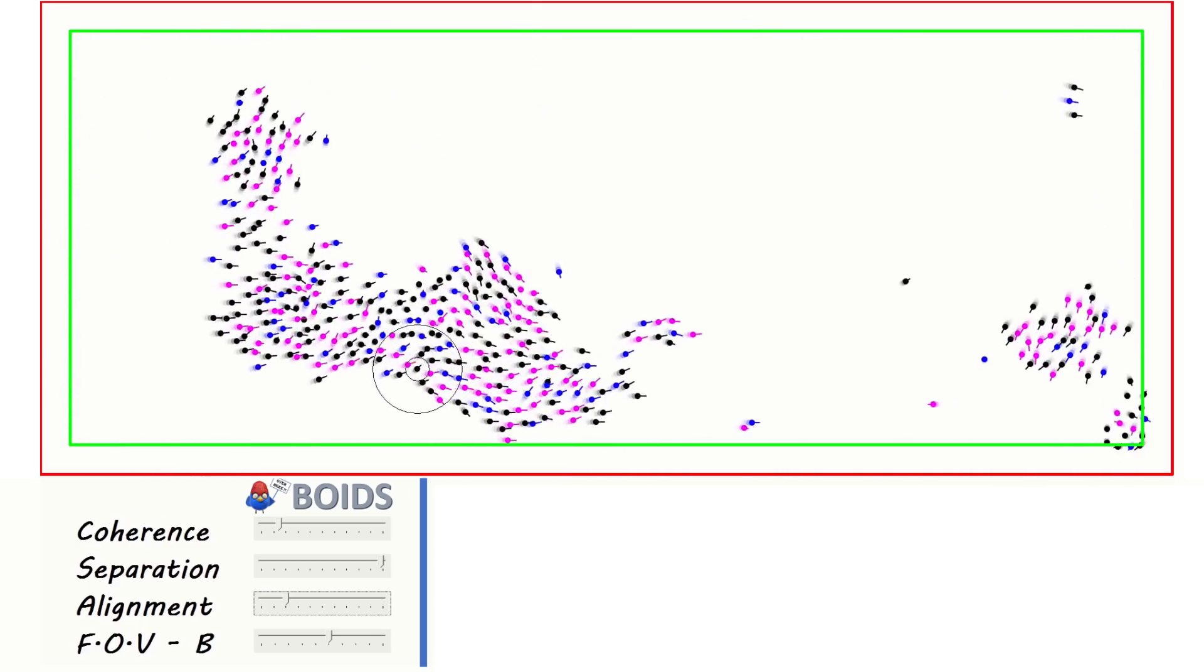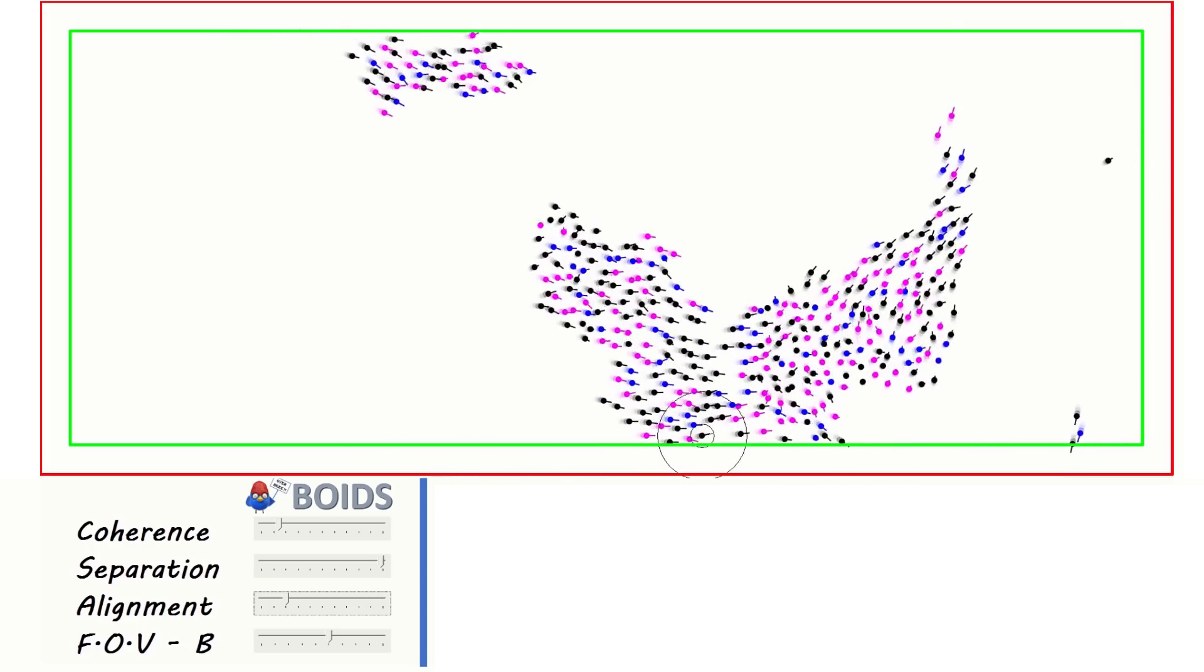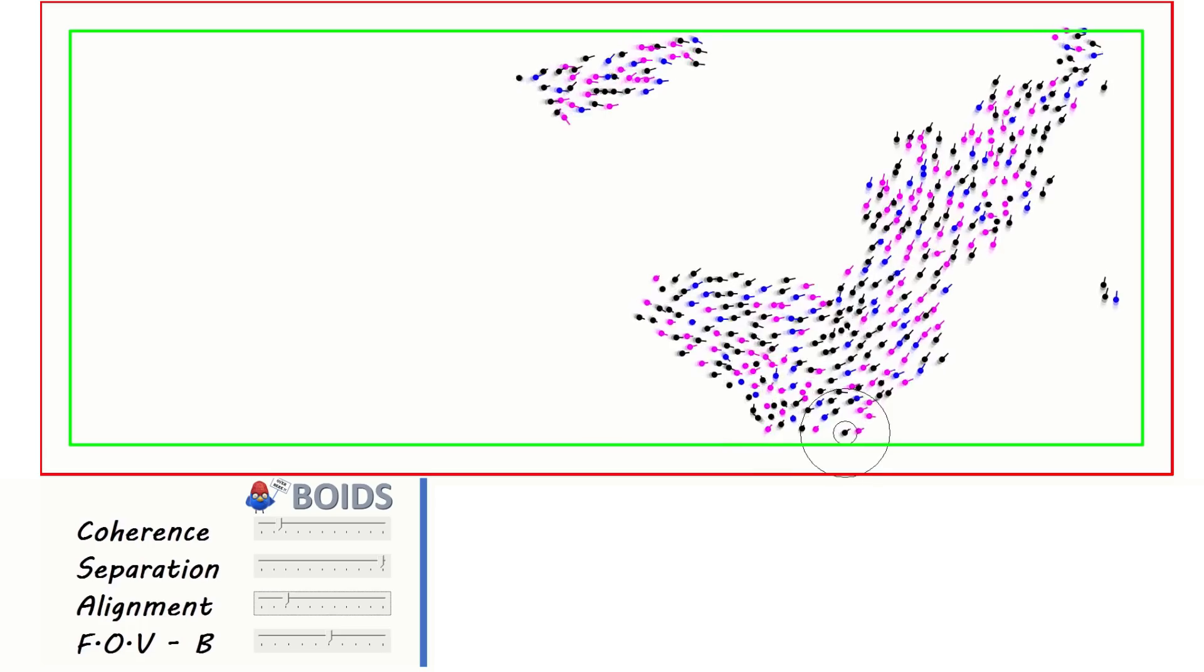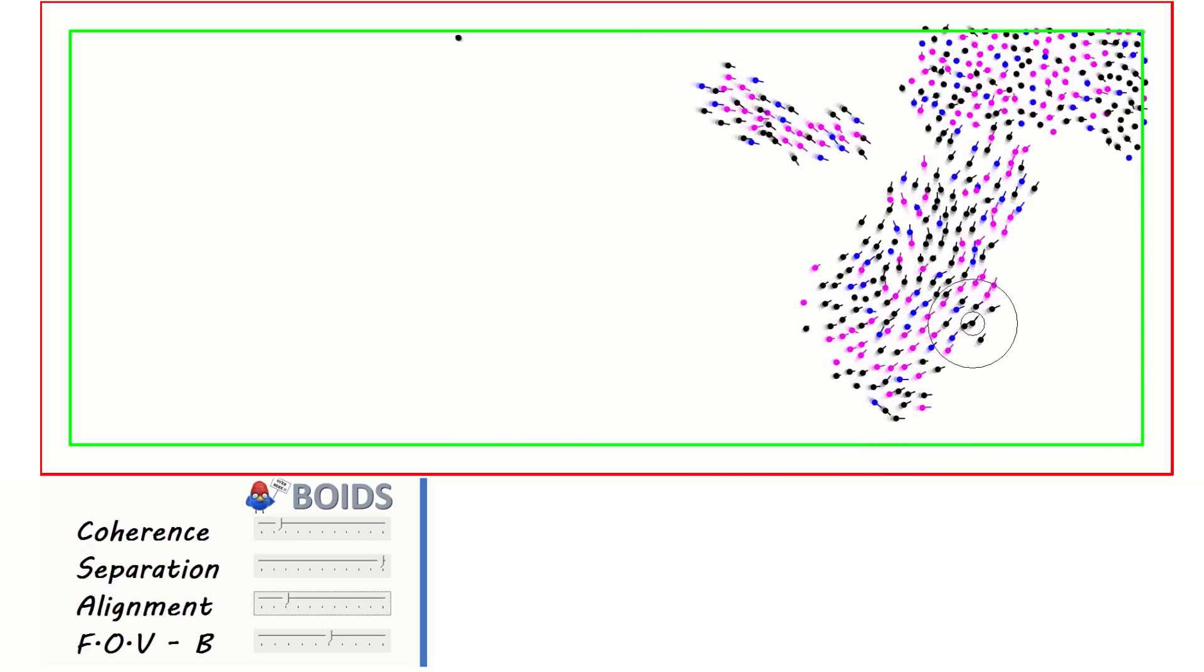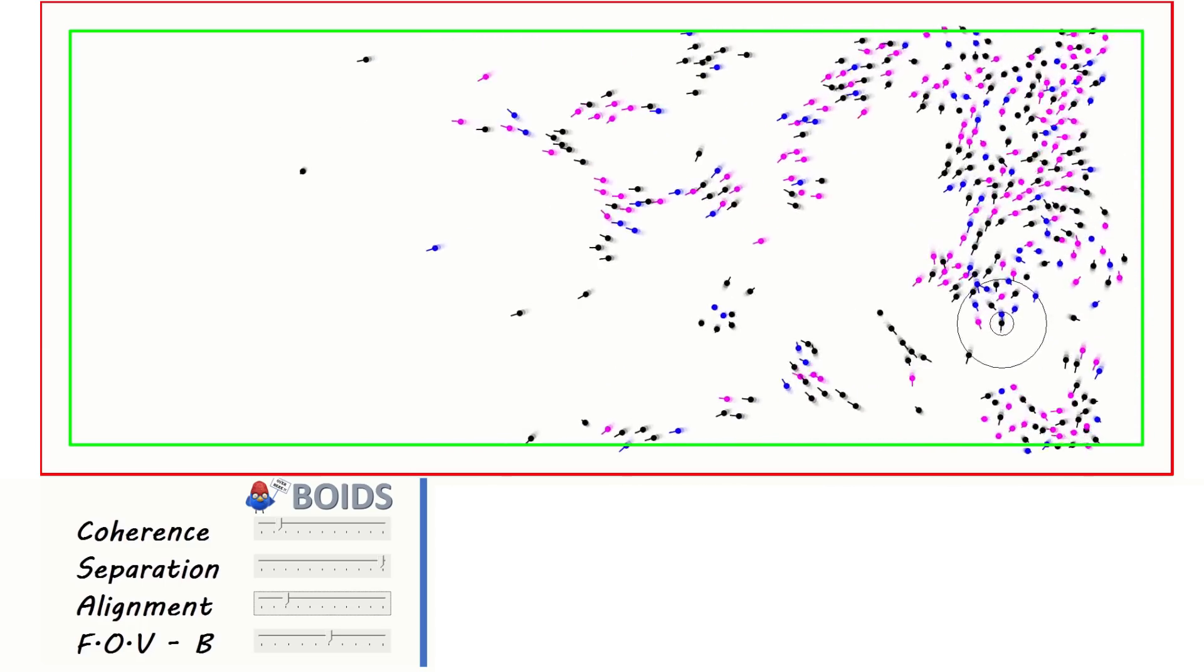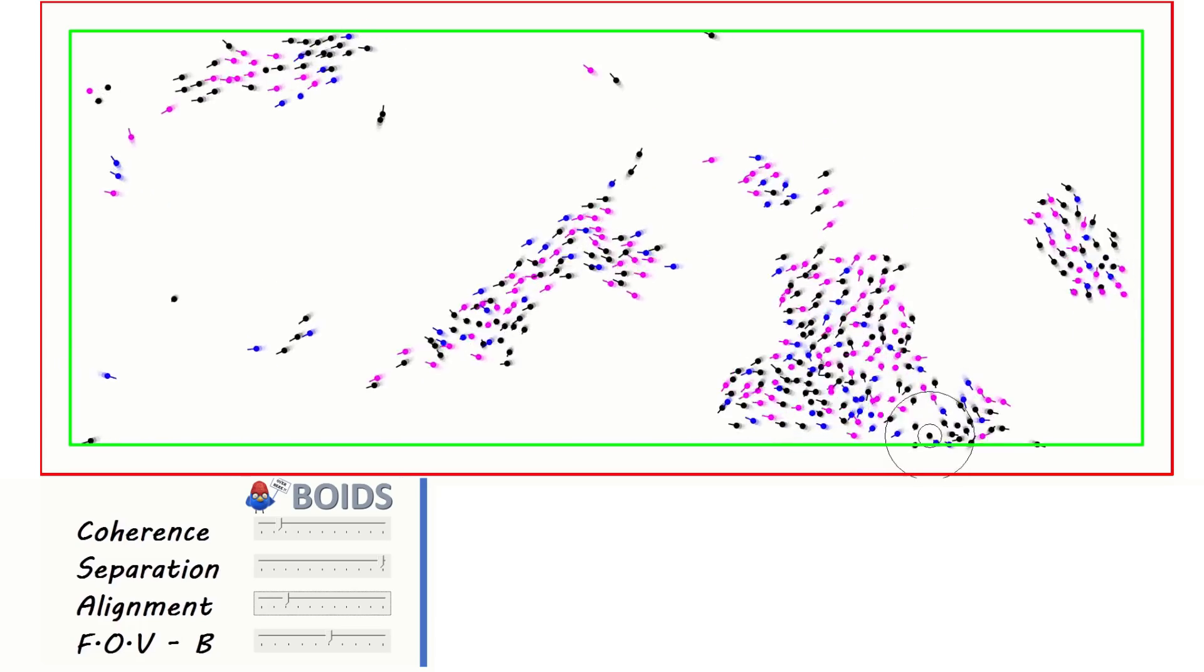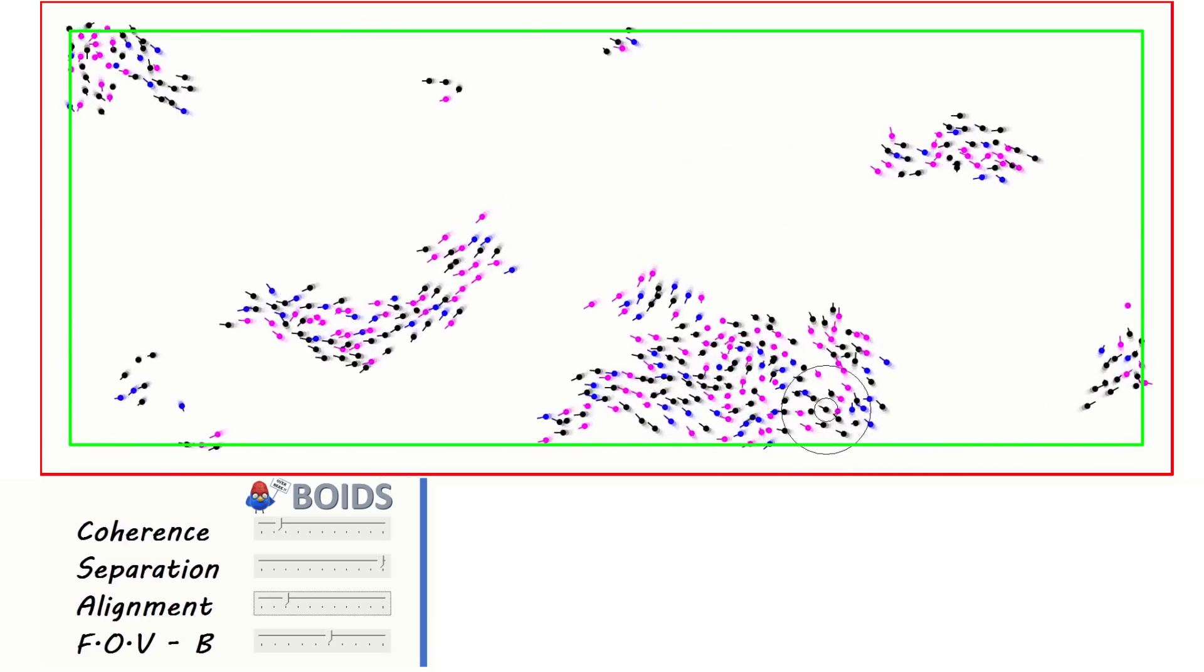So far so good, but of course, now I want the flock ID to do something other than just have a different color. To get birds of a feather to flock together, I need to add it as a filter to the coherence function. So in addition to the visual range setting, I'll add another condition which requires that the Boids be of the same flock before a coherence vector can be calculated. So let's see what that looks like.